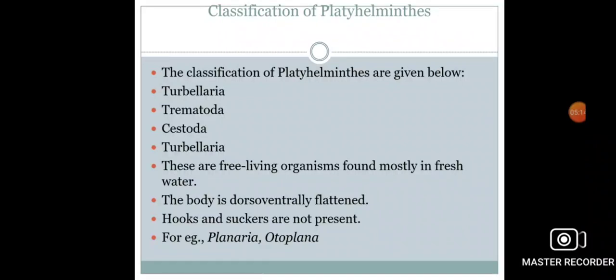Now first we see the general characteristics of Turbellaria. In class Turbellaria, all the free-living organisms are kept, and all such free-living organisms are found mostly in fresh water. Their body is dorsoventrally flattened, and their body lacks hooks and suckers. Examples of Turbellaria are Planaria, Otoplana, etc.